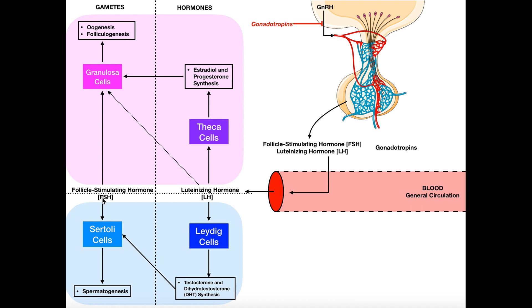For follicle-stimulating hormone, FSH acts directly on the Sertoli cells. Sertoli cells are involved in spermatogenesis — they don't directly cause it, but they strongly assist with it. These are located in the seminiferous tubules and act more like nurse cells, providing nutrients and extra help. Without functional Sertoli cells, spermatogenesis would suffer tremendously. So follicle-stimulating hormone promotes spermatogenesis through its action on Sertoli cells.